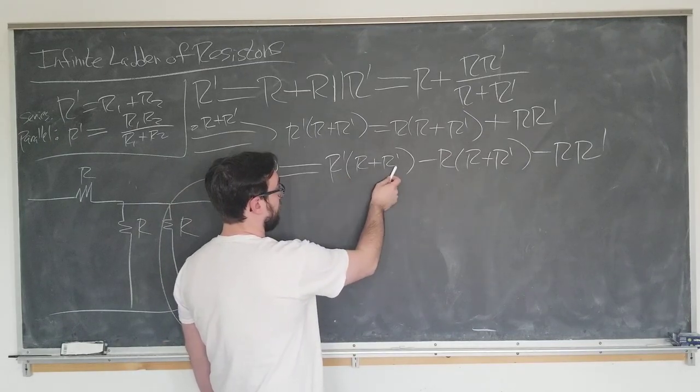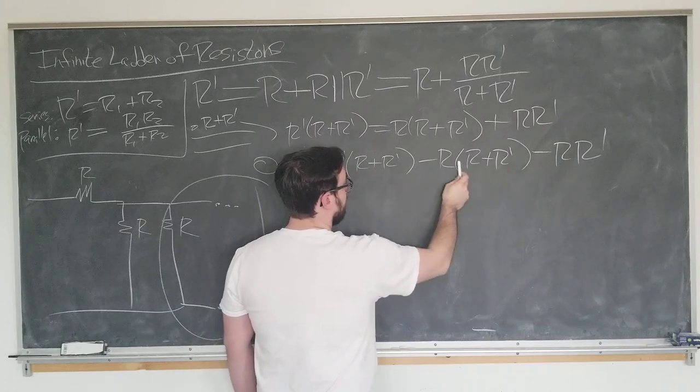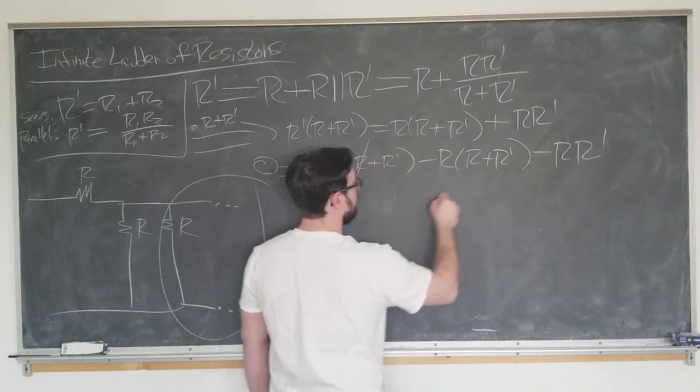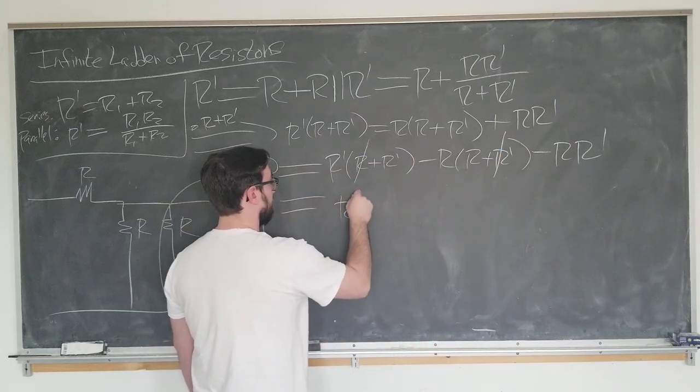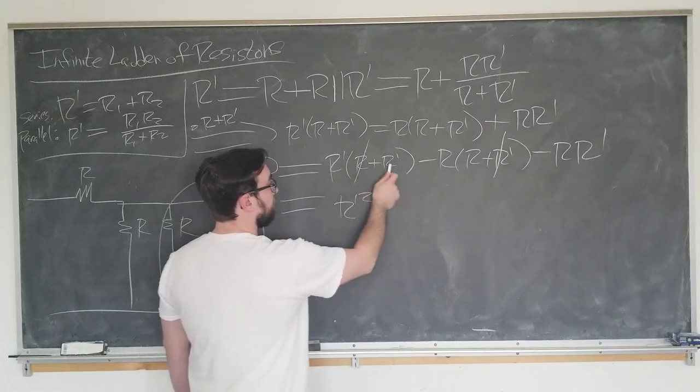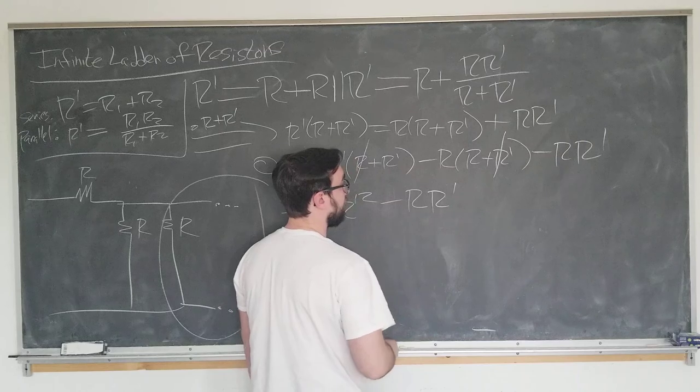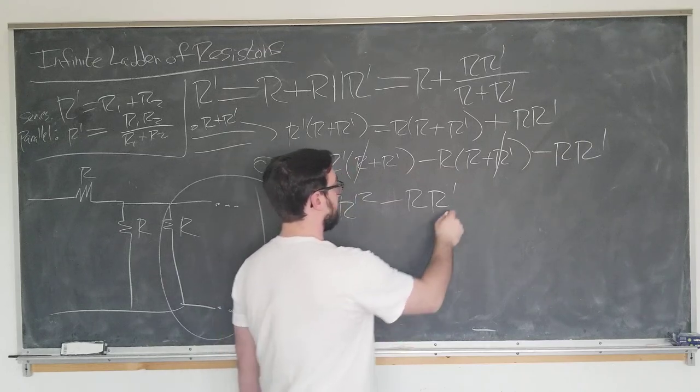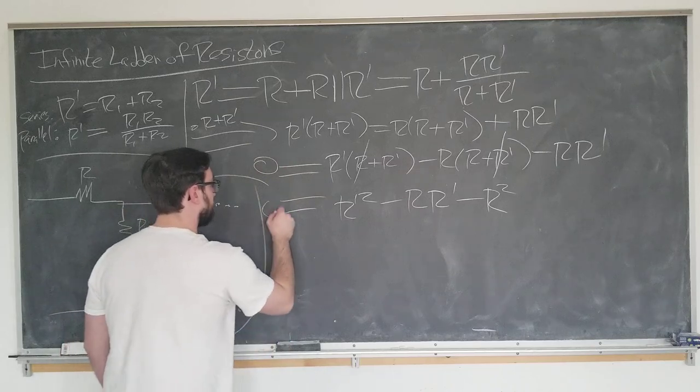Now we expect to see some cancellation. R prime squared equals... but we see that R prime R is going to cancel with this term here. So these two go away, everything else stays. So we got zero equals R prime squared minus R R prime minus R squared. Excellent. This is the quadratic that we have to solve.